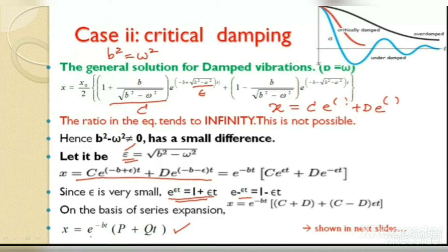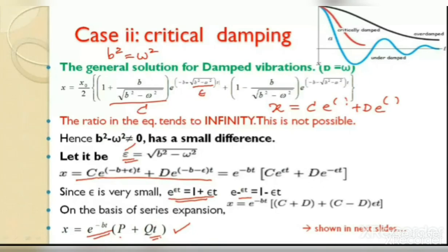Since ε is small, e^(εt) ≈ 1 + εt and e^(-εt) ≈ 1 − εt. Substituting: x = e^(-bt)[C(1 + εt) + D(1 − εt)] = e^(-bt)[(C+D) + εt(C−D)]. Setting p = C+D and q = ε(C−D), we get x = e^(-bt)(p + qt). As time progresses, x initially decreases fast because of the linear term qt, then e^(-bt) takes over, giving the characteristic critical-damping curve.